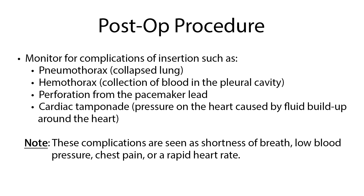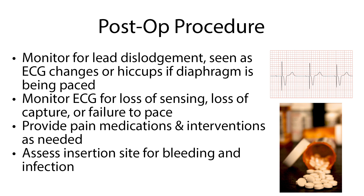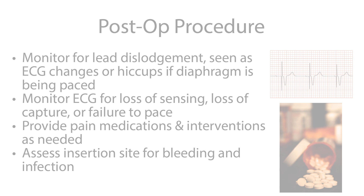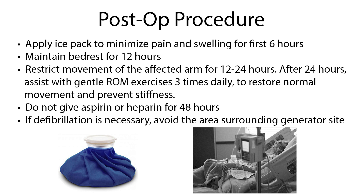Following the procedure, monitor for complications of insertion such as pneumothorax (a collapsed lung), hemothorax (collection of blood in the pleural cavity), perforation from the pacemaker lead, and cardiac tamponade, which is pressure on the heart caused by fluid buildup around the heart. These complications are seen as shortness of breath, low blood pressure, chest pain, or rapid heart rate. Monitor for lead dislodgement, seen as ECG changes or hiccups if the diaphragm is being paced. Monitor the ECG for loss of sensing, loss of capture, or failure to pace. Provide pain medications and interventions as needed. And assess the insertion site for bleeding and infection.